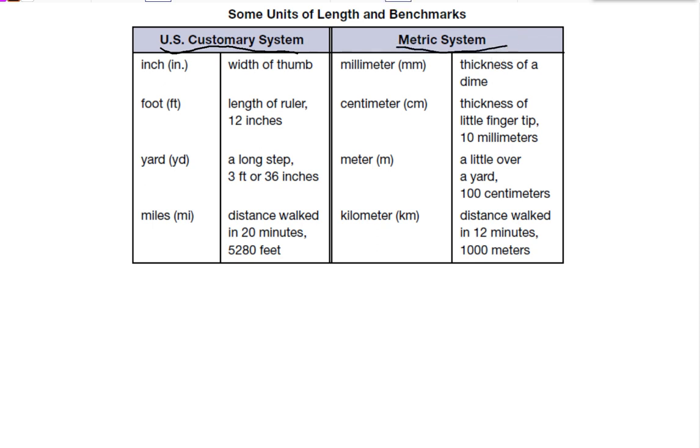So the U.S. Customary is measured in inches, which is about the width of your thumb. Feet, which is the length of the ruler, or 12 inches. A yard, which is 3 feet, or 36 inches. And it's about the same as one long step. And then we have miles, which is 5,280 feet. And it's about the distance you can walk in 20 minutes.